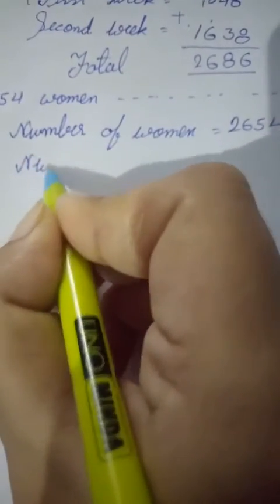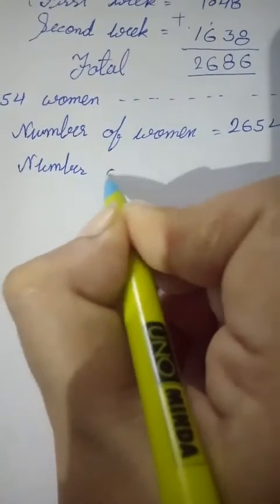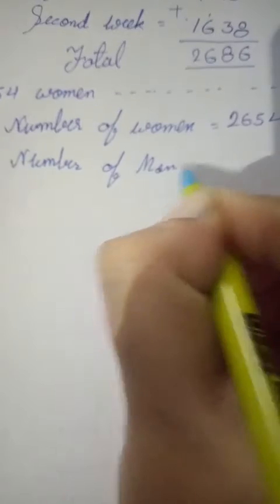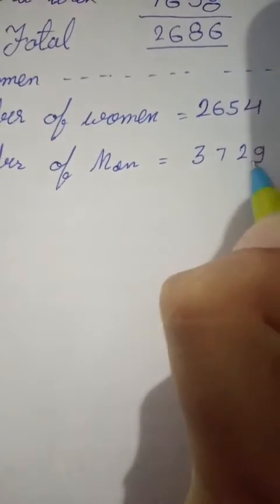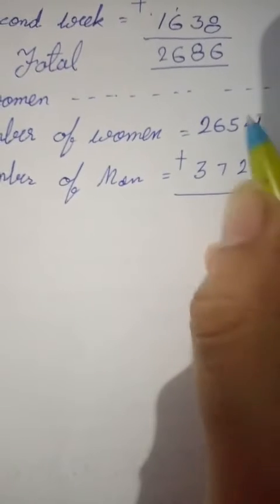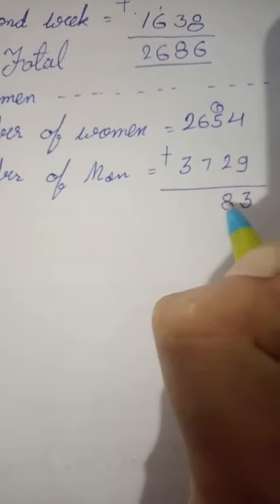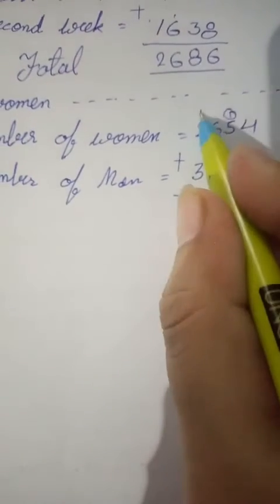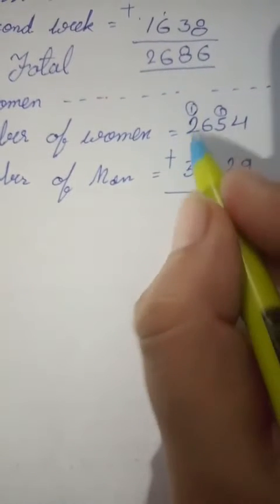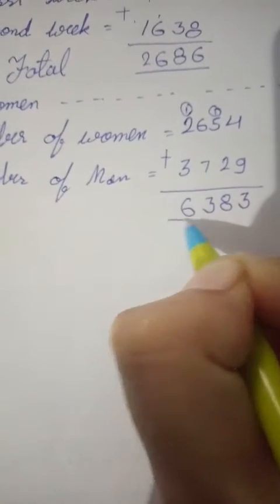Number of women is two thousand six hundred and fifty-four. Number of men is three thousand seven hundred and twenty-nine. Now add both numbers. 4 plus 9 is 13, transfer the carry 1. 5 plus 1 is 6, plus 2 is 8. 6 plus 7 is 13, transfer carry 1. 2 plus 1 is 3, plus 3 is 6.